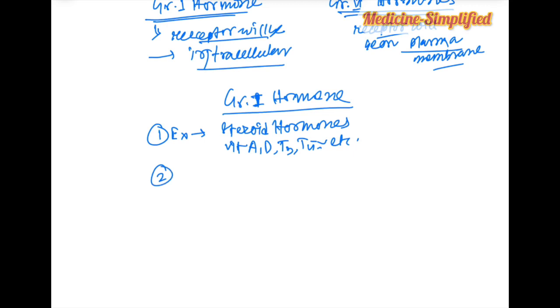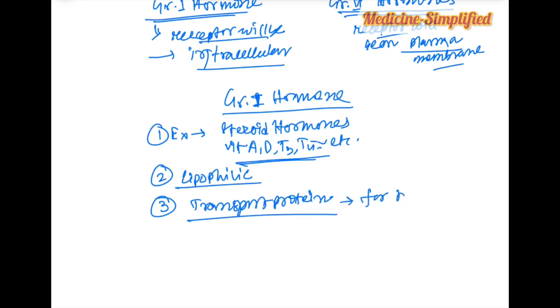Number two, these hormones are lipophilic. So they need a transport protein for traveling. In previous class I told you about that the hormones which act away from the source travel through blood. And in case of group one hormone, they travel through blood via a transport protein.